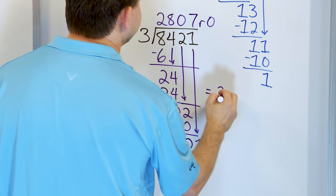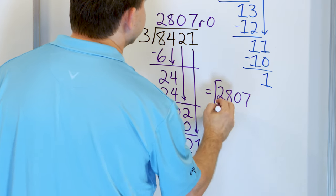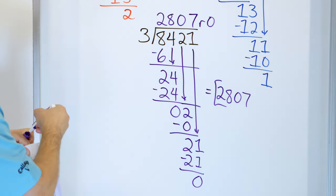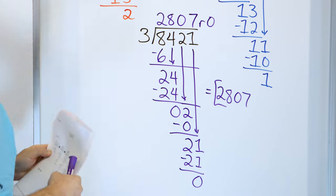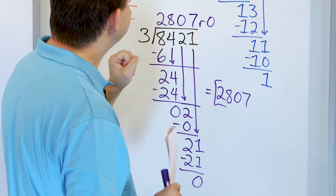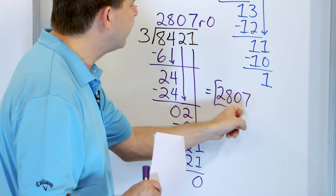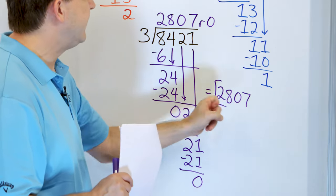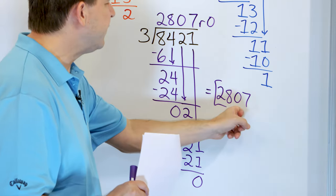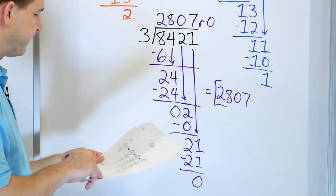So we could just say the answer is 2,807. If you had 8,421 grains of sand and put them into three equal piles, every pile would have 2,807 grains of sand, and there would be no leftovers, no remainder.